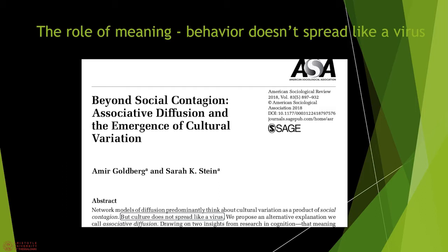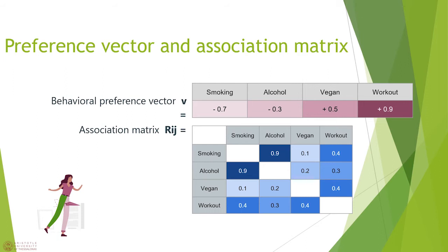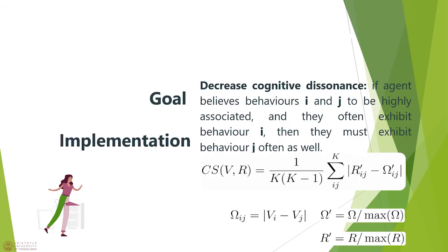We next detail the specifics of the model. In the model, agents have their own association matrix, which represents how their behaviors are associated. Agents also have a preference vector representing the agent's like or dislike for certain behaviors. The goal of each agent is to decrease cognitive dissonance. If an agent feels strongly about behavior I and believes behavior I is strongly associated to behavior J, he must also feel strongly about behavior J as well. This is implemented in the model by a constraint satisfaction formula, which will be one aspect that we modify.